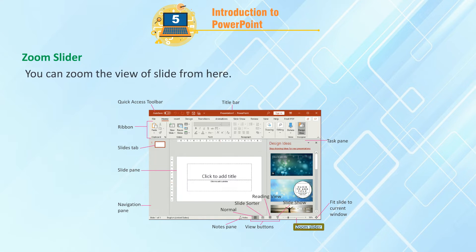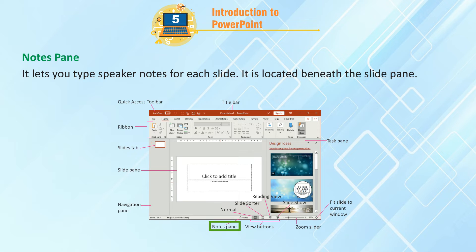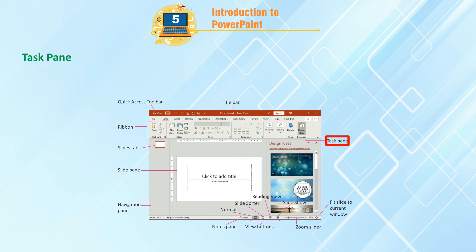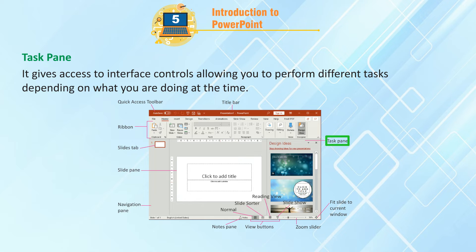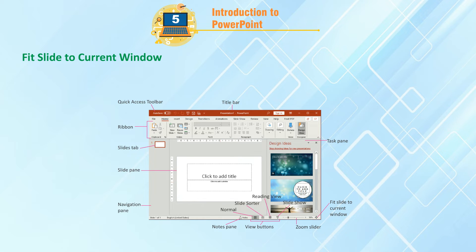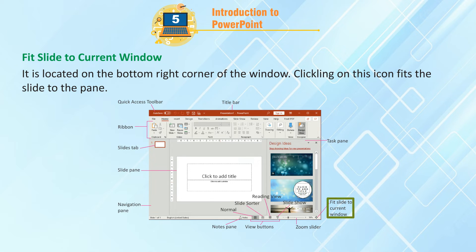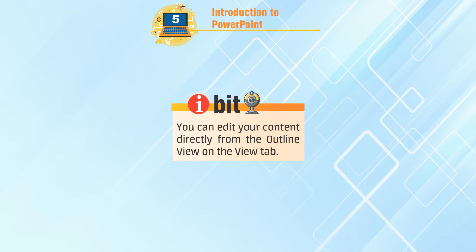Zoom Slider: You can zoom the view of the slide from here. Notes Pane: It lets you type speaker notes for each slide and is located beneath the slide pane. Task Pane: It gives access to interface controls allowing you to perform different tasks. Fit Slide to Current Window: Located on the bottom right corner of the window, clicking this icon fits the slide to the pane.